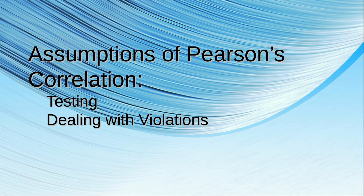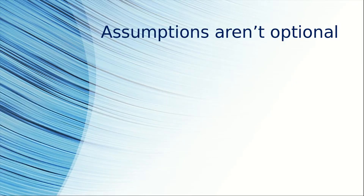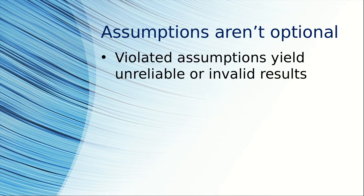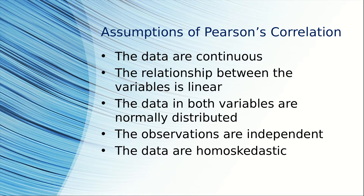In this episode, what I want to talk about isn't how to carry out a Pearson's correlation, but the assumptions of a Pearson's correlation and how to deal with violations. Importantly, assumptions aren't optional. You always need to check the assumptions because violated assumptions yield unreliable or invalid results. Here are the assumptions of a Pearson's correlation.